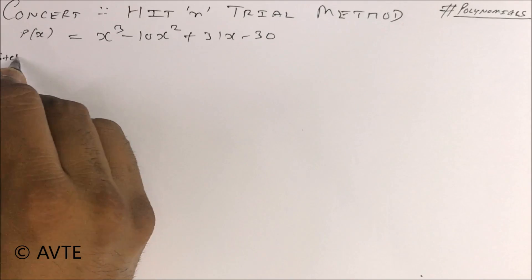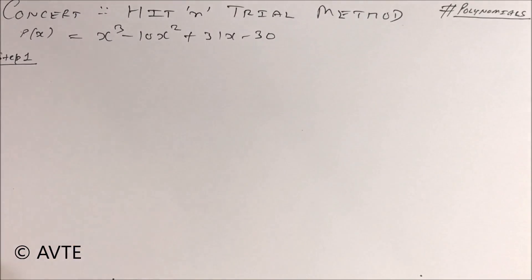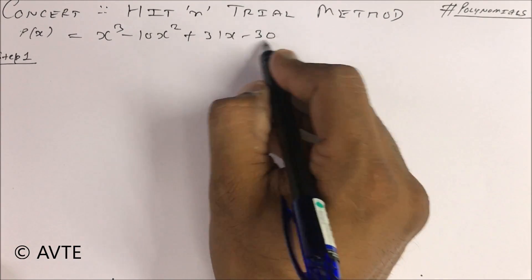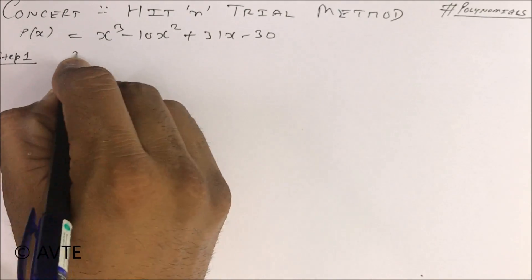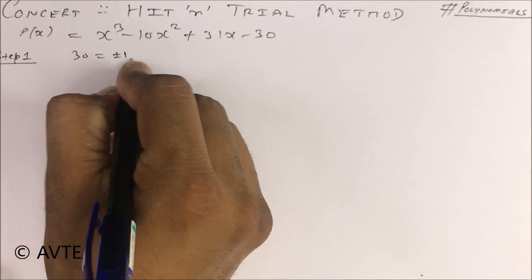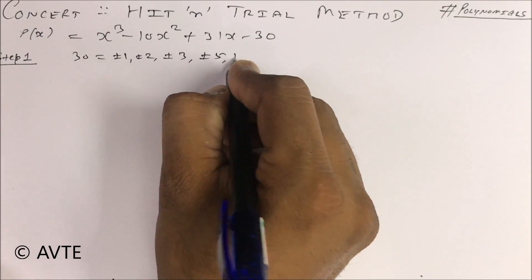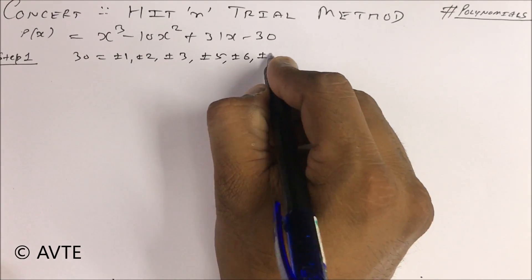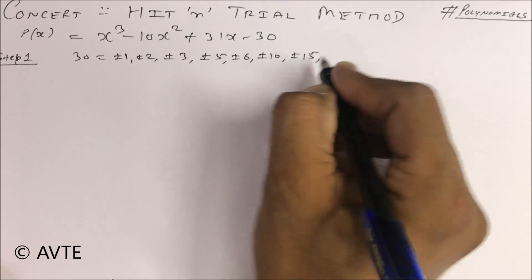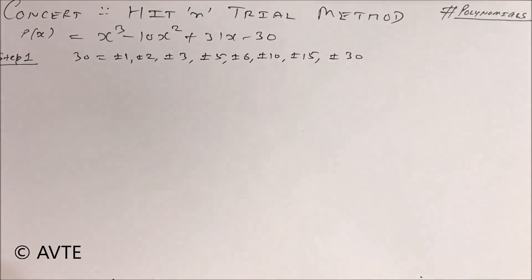Step 1: First you have to see the factors of 30. The factors of 30 are ±1, ±2, ±3, ±5, ±6, ±10, ±15, and ±30. So guys, these are your factors of the given polynomial P(x).